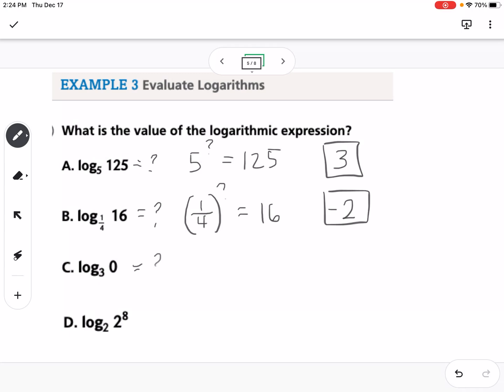And then our next one, I'm going to set that equal to the question mark as well. So 3 to the what power equals 0. 3 to the what power equals 0, and there is nothing. There's nothing we can raise 3 to to make it equal 0, so this would be no solution.